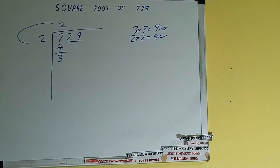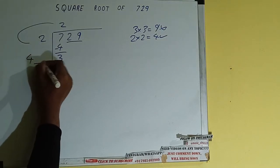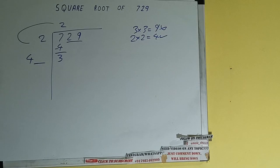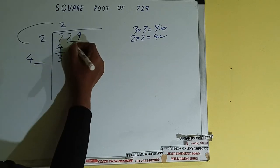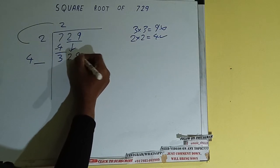Now we did 2 into 2 so add both. So 2 plus 2 will be 4. Write it here and keep one digit extra. And this number we need to make it big. So bring the next pair down and it will be 329.